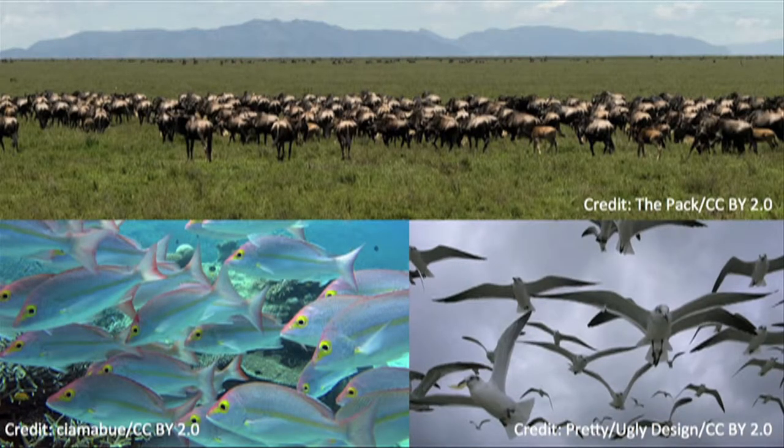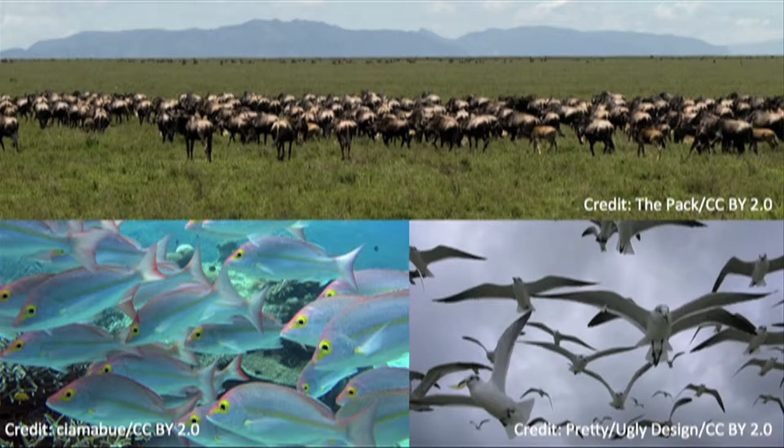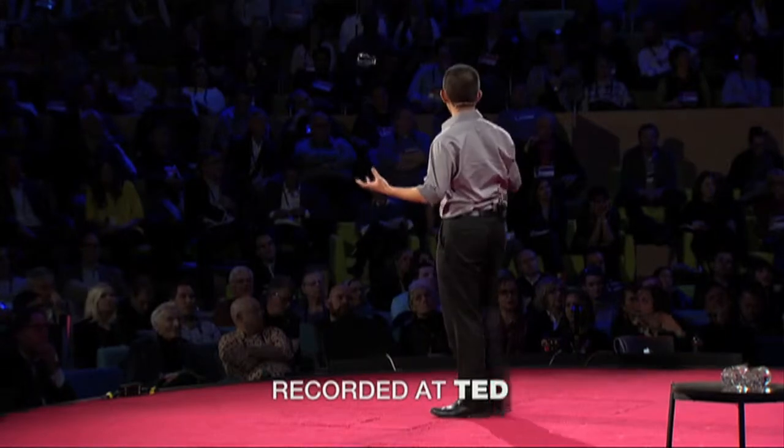The common answers include things like seeking safety in numbers, or hunting in packs, or gathering to mate or breed. And all of these explanations, while often true, make a huge assumption about animal behavior, that the animals are in control of their own actions, that they are in charge of their bodies. And that is often not the case.